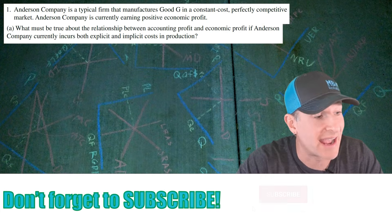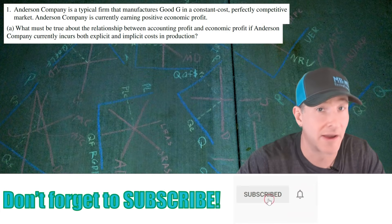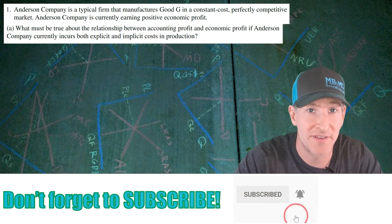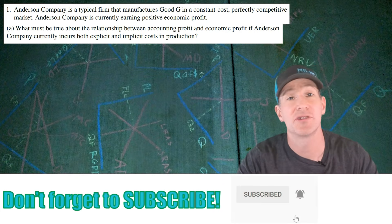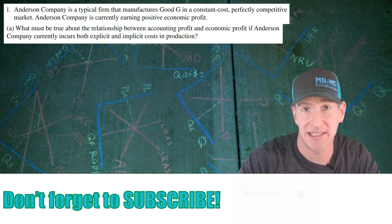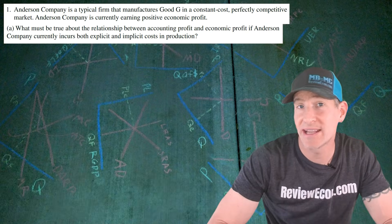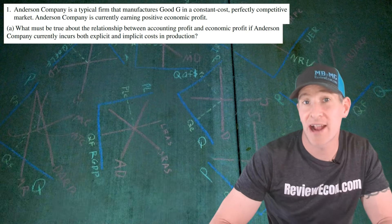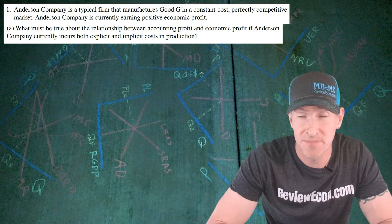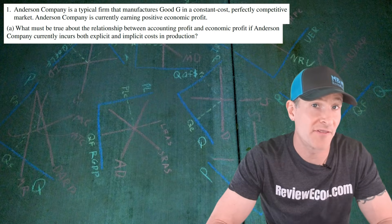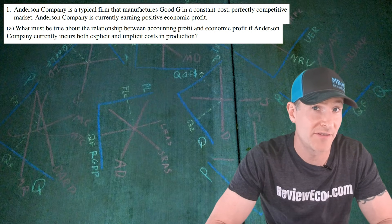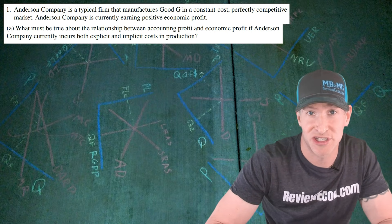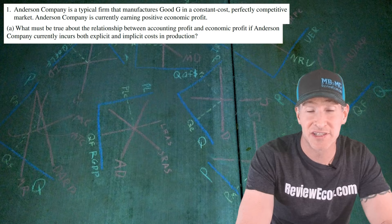This question starts off with Anderson Company. They are a typical firm in a constant cost, perfectly competitive industry, and they are producing good G. Anderson Company is also currently making an economic profit. For part A, we are asked what must be true about the relationship between accounting profit and economic profit if there are both implicit and explicit costs of production.